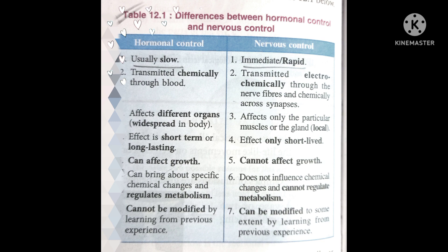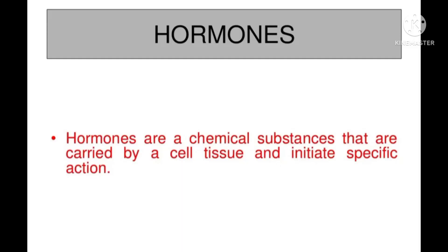Here are the seven differences between hormonal control and nervous control — you may pause the video to go through all seven points. You should focus especially on point number five of both controls and point number seven. Point five is that hormonal control can affect growth while nervous control cannot, because hormonal control has the growth hormone. Point seven is that hormonal control cannot be modified by learning from previous experiences, whereas nervous control can be modified to some extent due to reflexes. Now let us know what hormones are.